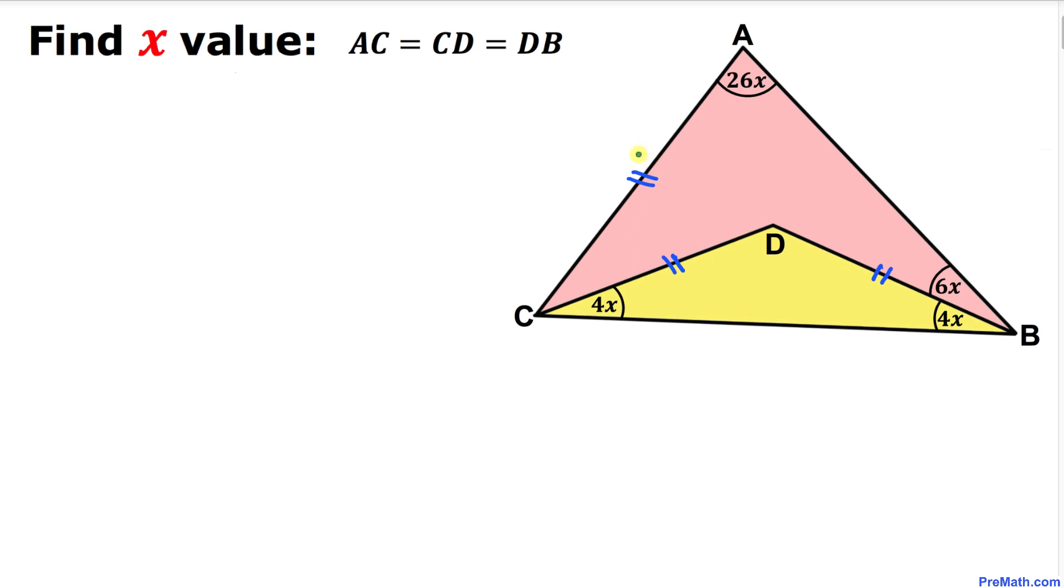And moreover these line segments AC, CD and DB are equal in length and now we are going to calculate the value of X. And let me make it one thing very clear that this figure may not be 100% true to the scale.